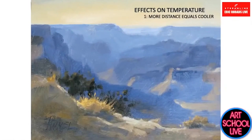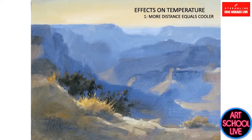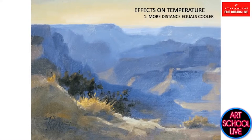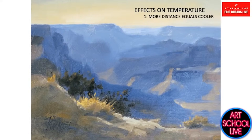Atmosphere also affects the temperature of color. As yellow drops out and then red, the appearance is that things get cooler in the distance. This sketch done at the Grand Canyon shows that quite well — you can see the yellow in the sky from the pollution. It's a pretty standard principle that things get cooler as you move back.